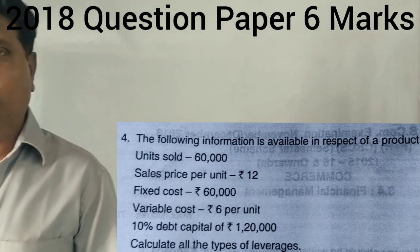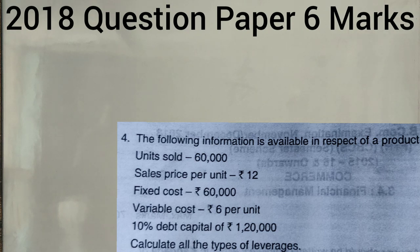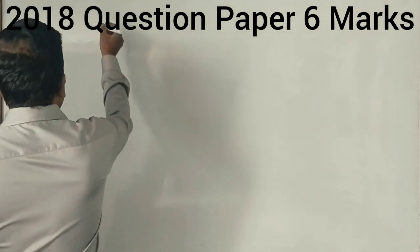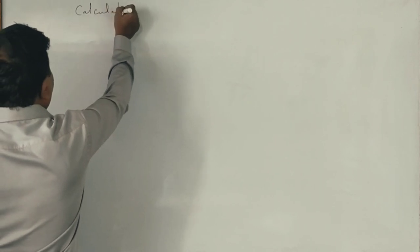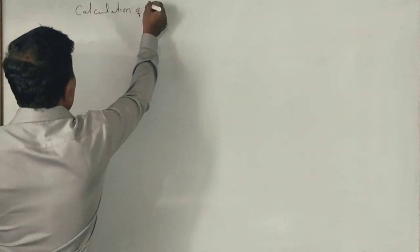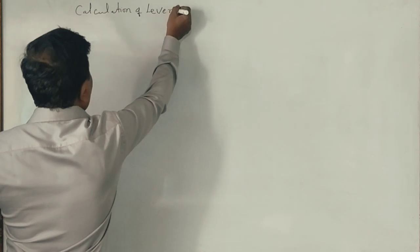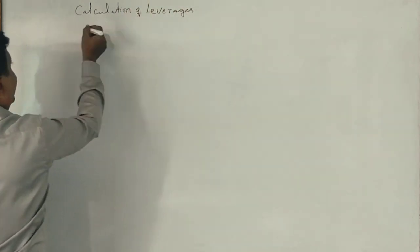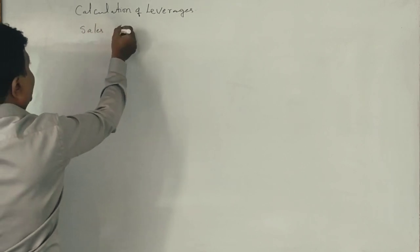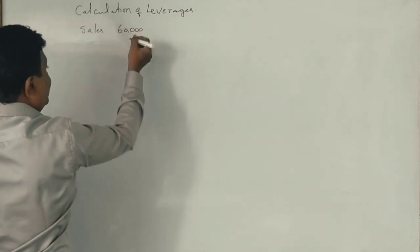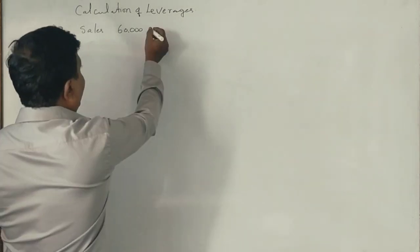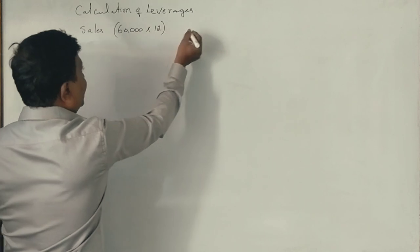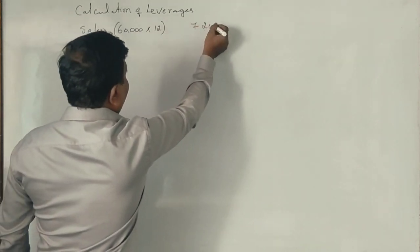Calculate all types of leverages. Now, let's see how we can work on this. First, let's take calculation of leverages. In this, first, we take sales. See, it's given 60,000 units have been sold every year and each unit is sold at the rate of 12 rupees per unit and it comes to 7,20,000 rupees.